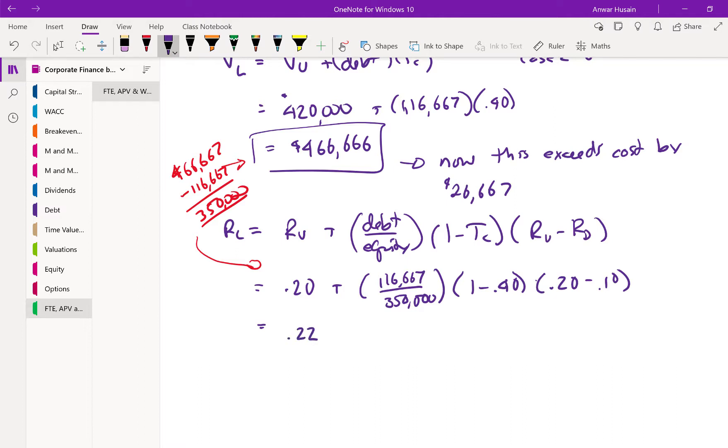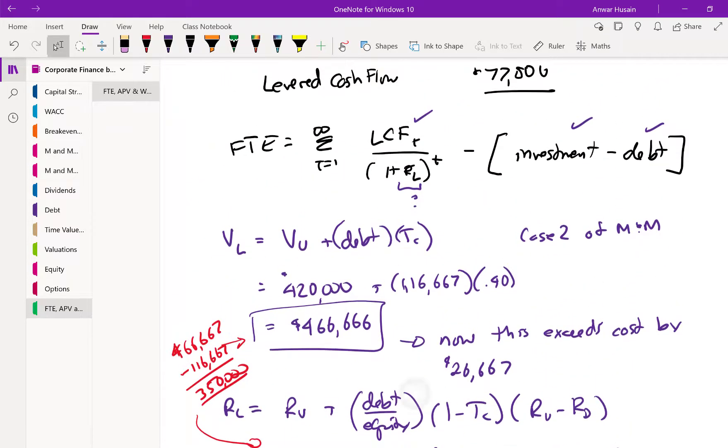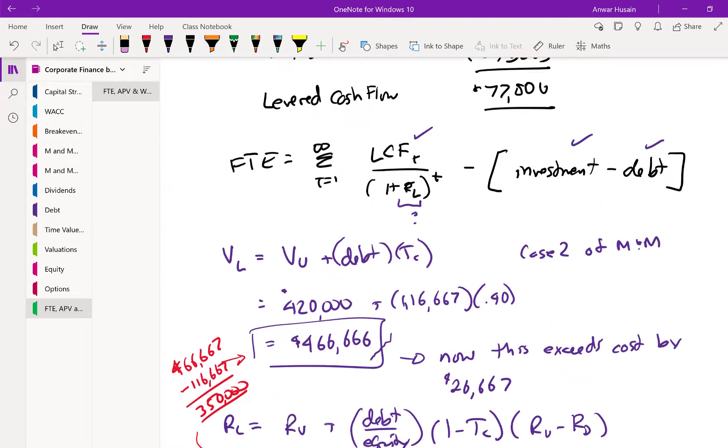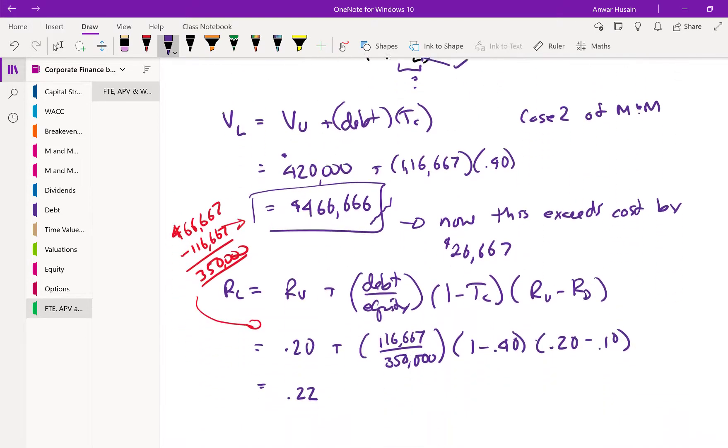So our levered cost of equity that we calculate using this formula ends up being 22%. Now, what is the original formula? I'll go back up here. Now we can put this up to 0.22. We know that. So let's plug all of that in.